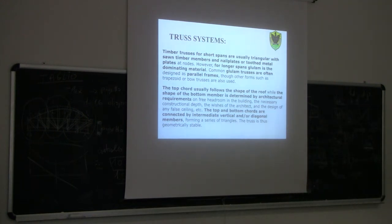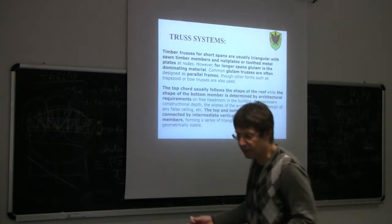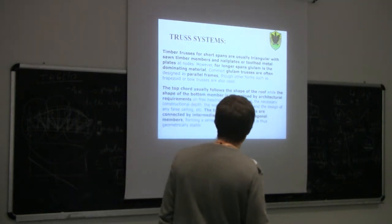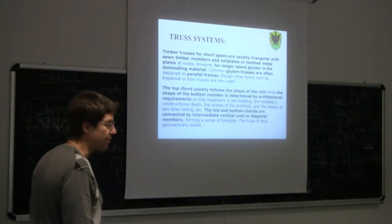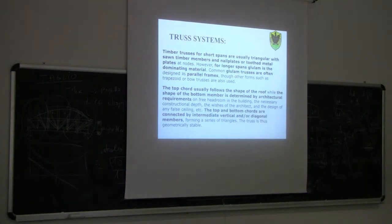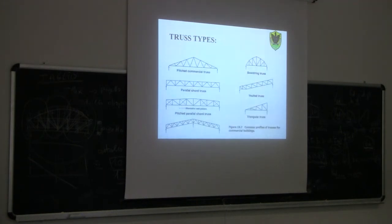As a reminder from statics, a typical truss system is made by a number of triangles. If your truss system can be divided into triangles with nodes at the ends, then it is a truss system. A typical truss system is statically determinate, meaning we can solve it using the equations of equilibrium.